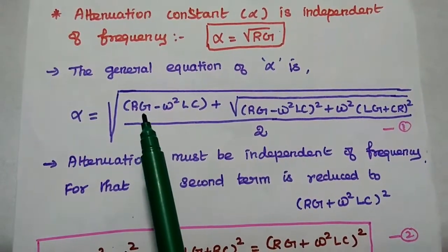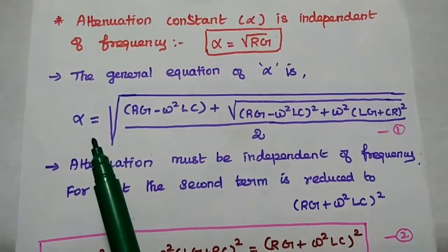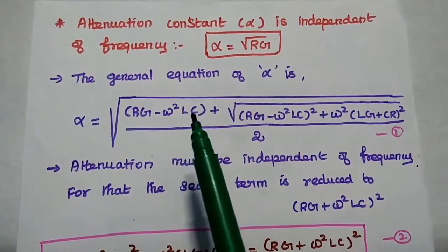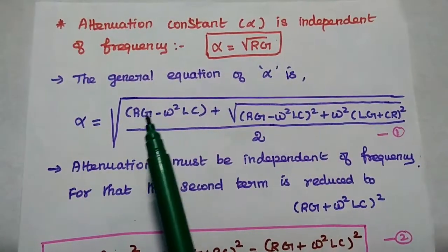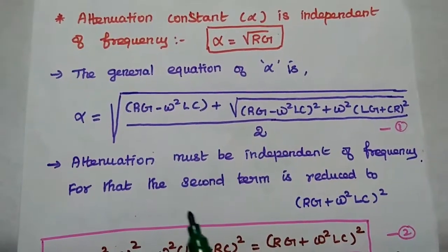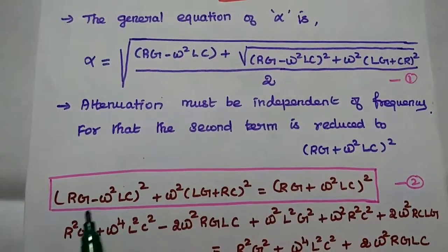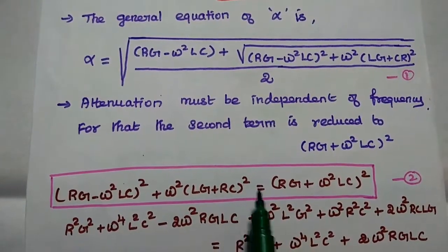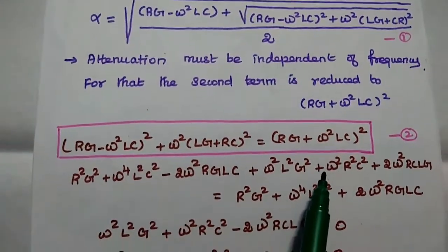The first term is rg minus omega squared lc. We want to make the attenuation constant frequency independent, so we want to remove the omega term. For that, we consider the inner part of the square value as rg plus omega squared lc, the whole square — then only we can remove the omega term. So we write the square root term: rg minus omega squared lc, whole square, plus omega squared into lg plus rc, whole square, is equal to rg plus omega squared lc, whole square. Consider that as the second equation.